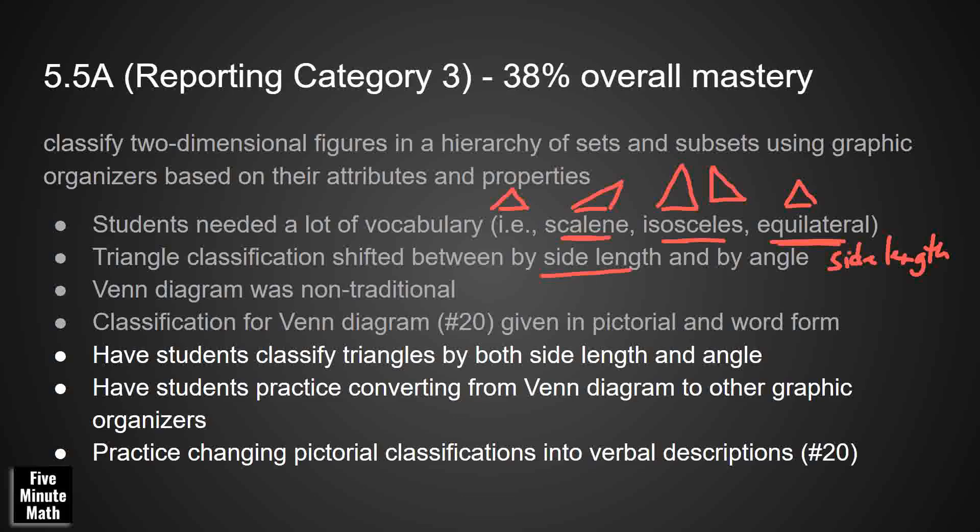Students need to know a lot about these different triangles. And they had to go between side length and angle. Sometimes students don't know that you can classify any triangle both ways. So they had to sometimes classify by side length, by angle. And both of those are valid ways of classifying triangles. And then this Venn diagram was non-traditional. The circle within the circle within the circle, that was probably less comfortable and familiar than the traditional Venn diagram.